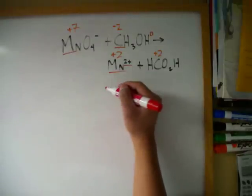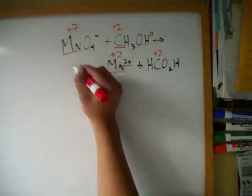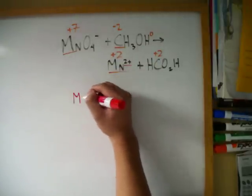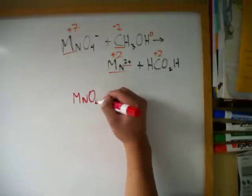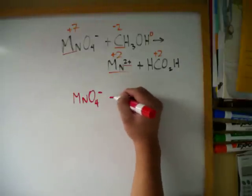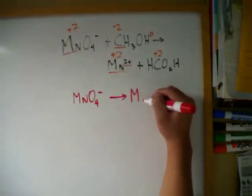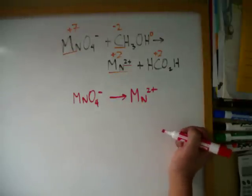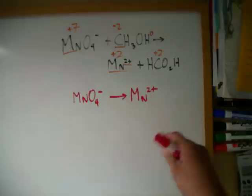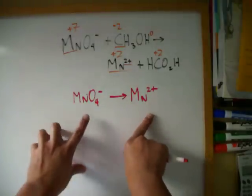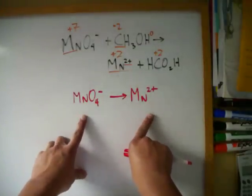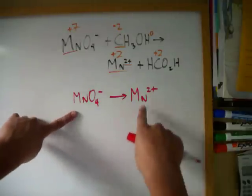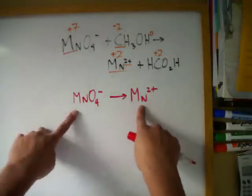First, we're going to do Mn. Mn goes from MnO4 minus and it produces Mn2 plus. The first thing we're going to do is balance all the elements except for hydrogen and oxygen. Well, there's one Mn here and one Mn here — we're balanced.